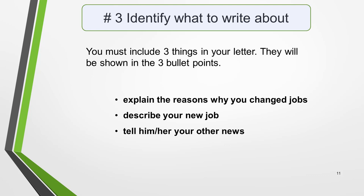Step 3: identify the three things you must write about. You must include three things in your letter, and they will be shown in the three bullet points in the question. For example, in our question they are: explain the reasons why you changed jobs, describe your new job, and tell him or her your other news. You don't need to write about anything else.